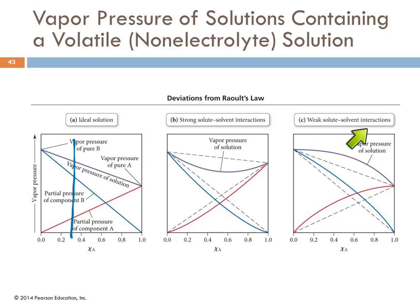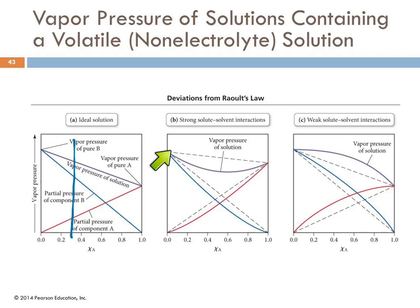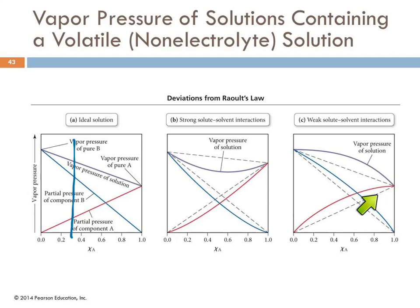With weak interactions between the two components, they're trying to escape each other, so the actual vapor pressure of each component bulges above the ideal behavior, and we see a corresponding peak in the total vapor pressure of the solution.